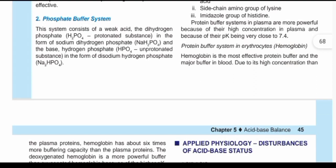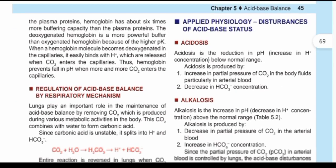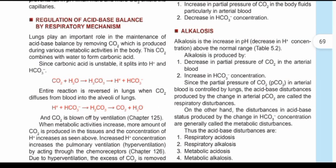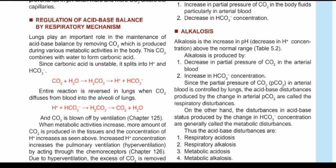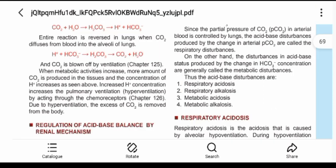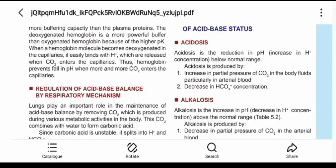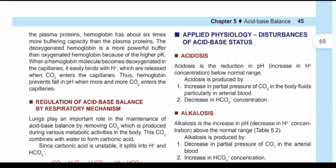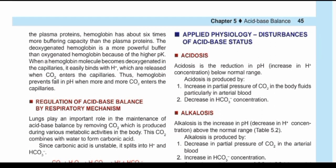The protein buffer system — including hemoglobin — will be dealt with under biochemistry. For respiratory regulation of acid-base balance, near the alveoli, bicarbonate and hydrogen ions formed from carbonic acid combine again to reform carbonic acid, which then dissociates, while the CO₂ produced is excreted by the lungs. For renal regulation, when there is high acidity in the body, the kidneys excrete more hydrogen ions and retain more bicarbonate; if acidity is low, the reverse occurs.